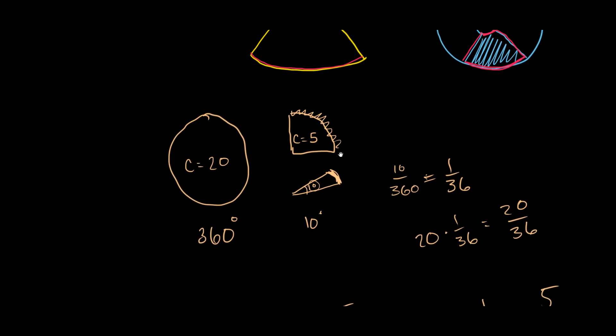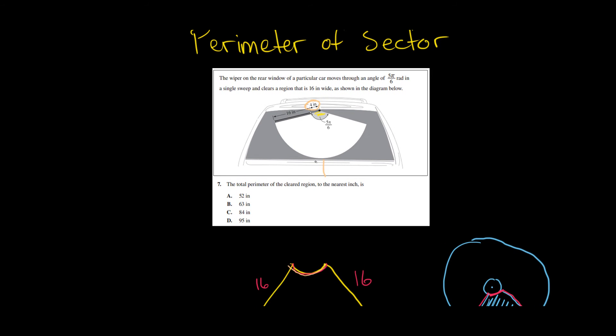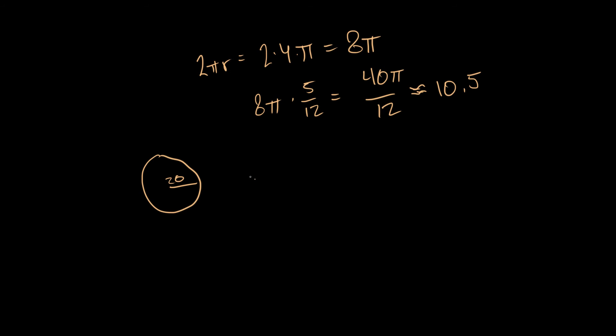Now we're going to do the same thing with this larger arc right here. So what would the radius of that be? Well you might say it's 16 but it's actually, if we're taking from the center, it's the 16 plus the 4. So that radius in total is actually 20. So now we have a circle with radius of 20 and we're going to run through it the same way. The angle is the same, 5π over 6. So now all we have to do is find the circumference. So circumference is equal to 20 times 2 times π, which is going to give us 40π.